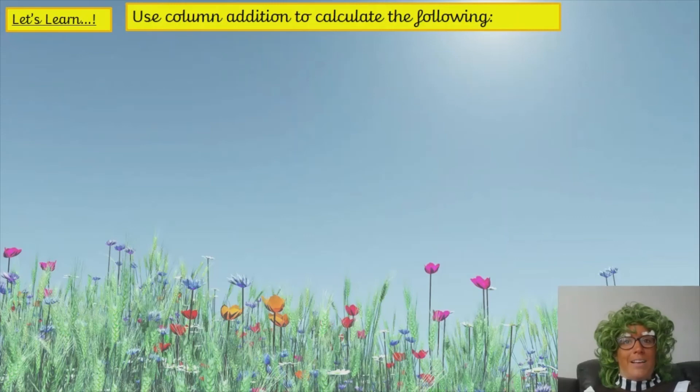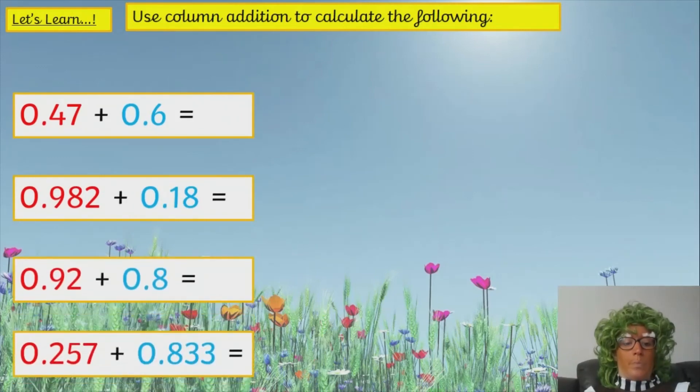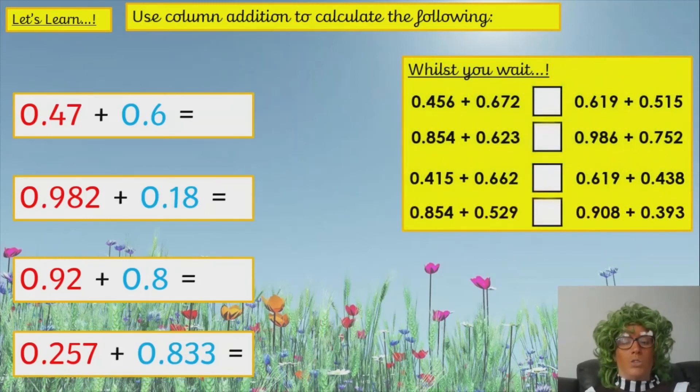I keep looking over the head, because I'm sitting in my front room, and I've got a big window. And every now and again, somebody walks past. I'm just waiting for somebody to look in and see me dress like an Oompa Loompa. But they haven't looked in yet, so it's okay. So, use column addition to calculate the following. So, this time, you're going to use column addition, just to calculate the following decimals. Think carefully. If you haven't got the same amount of decimal places, you need to add a 0 to help you. You don't have to, but it does help. And you've got a whilst you wait. So, you've got four questions, and then have a go at the whilst you wait, if you finish that quickly.